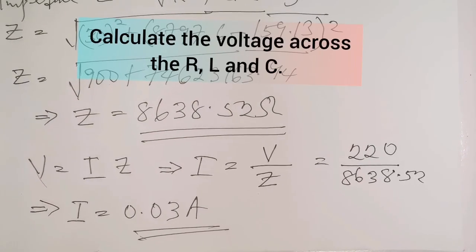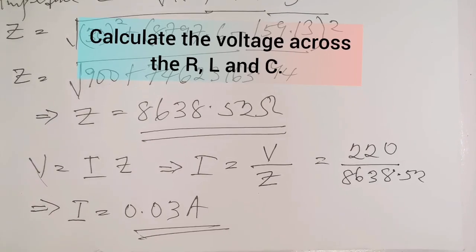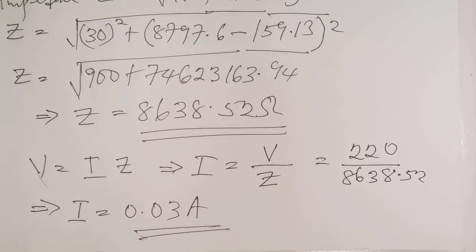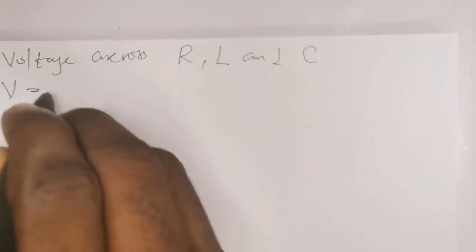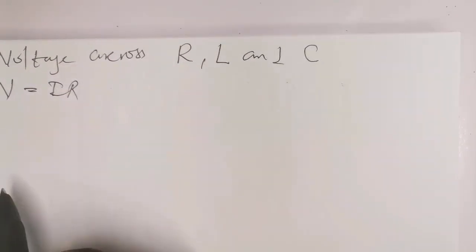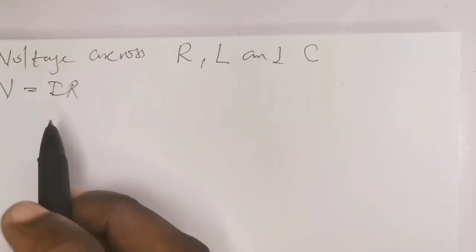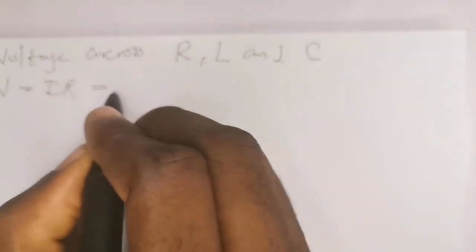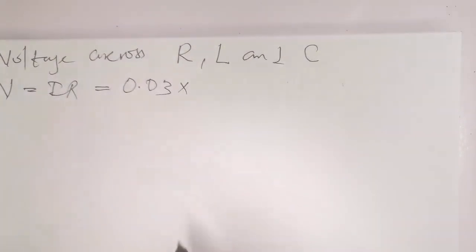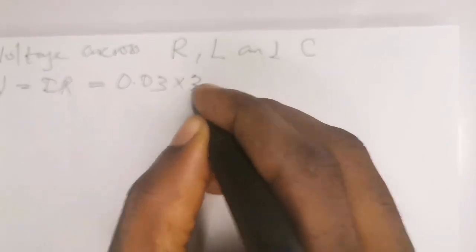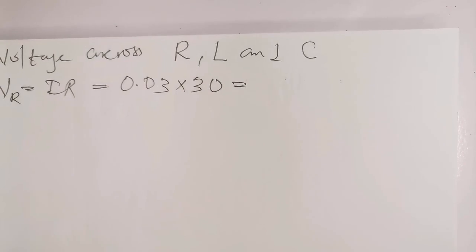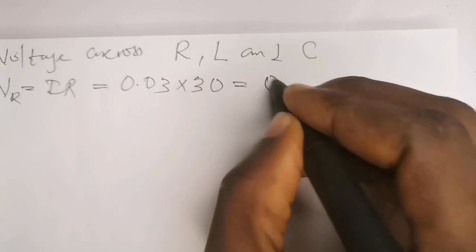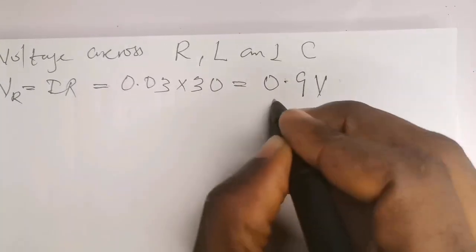The next question asks for the voltage across the resistor, inductor, and capacitor. The voltage across the resistor VR is simply I × R. Our supply current is 0.03 amperes multiplied by the resistor of 30 ohms, giving VR = 0.03 × 30 = 0.9 volts. This is the voltage across the resistor.